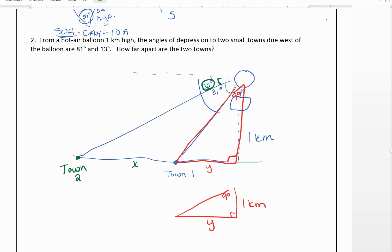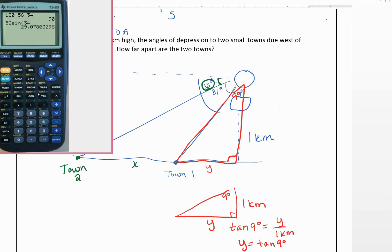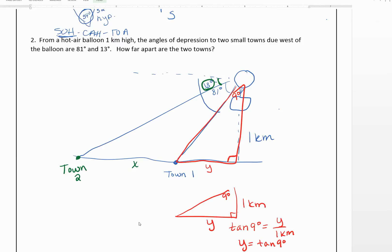Okay, so we can use the 9 degrees and set up an equation to find Y. So we can say this would be opposite and adjacent, so tangent of 9 degrees equals Y over 1 kilometer. So we can multiply both sides by 1. We'd say Y is equal to tangent of 9 degrees. So we see that that's 0.16 kilometers.